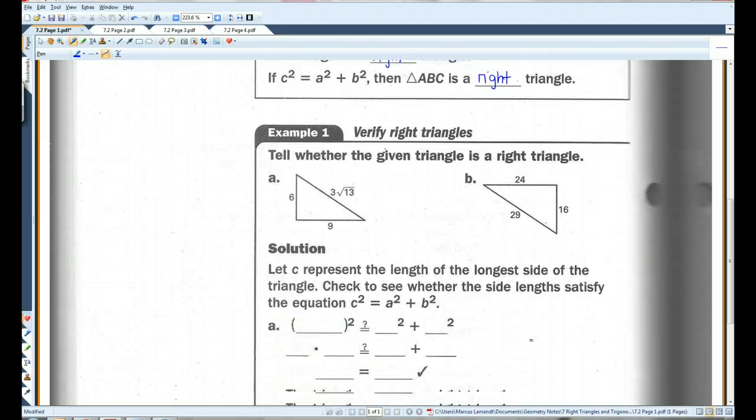Okay, so for example, if you are given this and you are told to tell whether the given triangle is a right triangle, you can check it using the Pythagorean Theorem. So like for this one, once again I'm using C squared equals A squared plus B squared. My C is 3 root 13. I've got 6 squared and 9 squared.